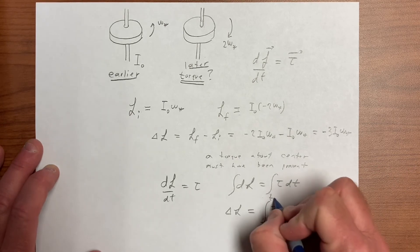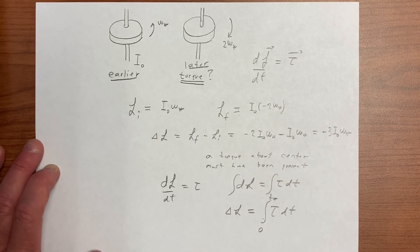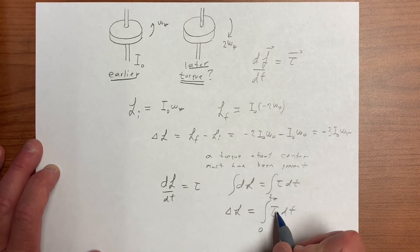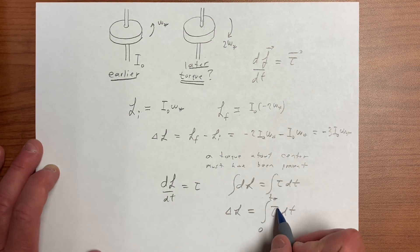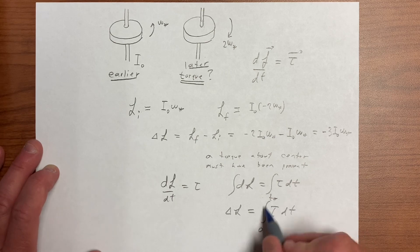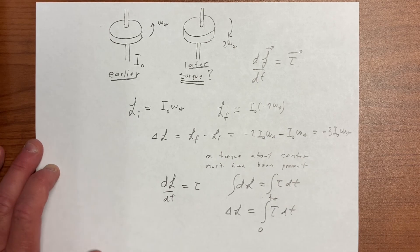That's equal to this integral of the torque over some time from t equals 0 to t equals t star. That doesn't tell us what the torque is. The torque could have changed over time, but overall this quantity is not equal to 0.